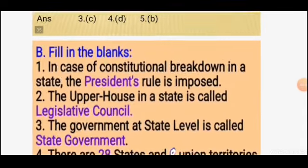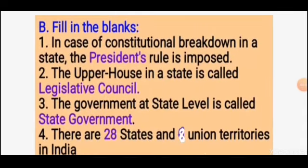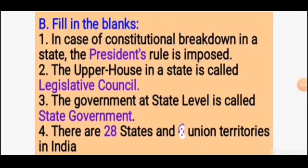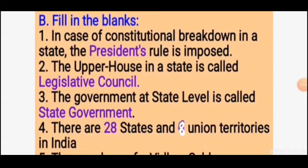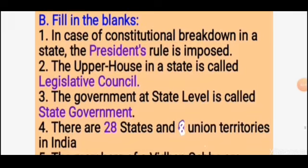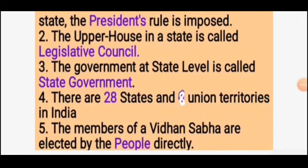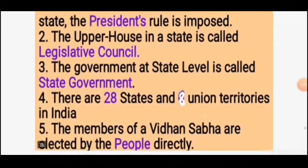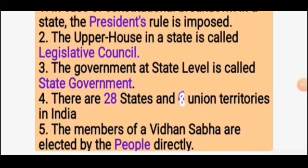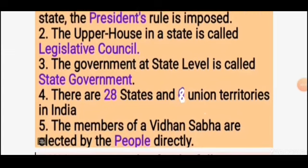Now, filling the blanks. First: in case of constitutional breakdown in a state, the answer is President's Rule. Second: the upper house in a state is called the Legislative Council. Third: the government at state level is called the State Government. Fourth: there are 28 states and 8 union territories in India. Fifth: the members of Vidhan Sabha are directly elected by the People.